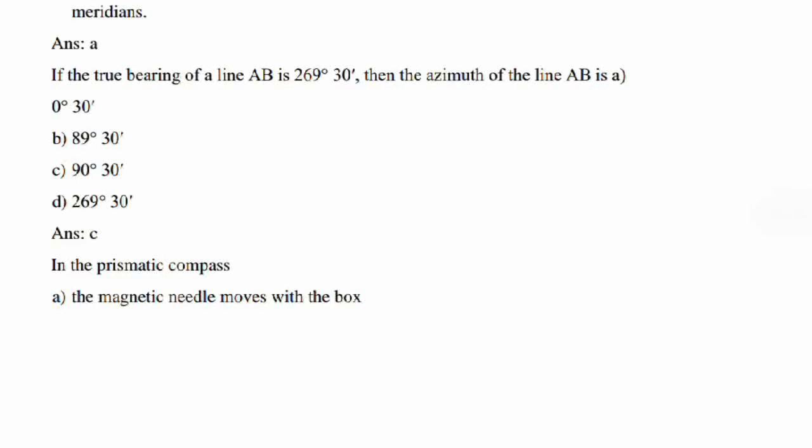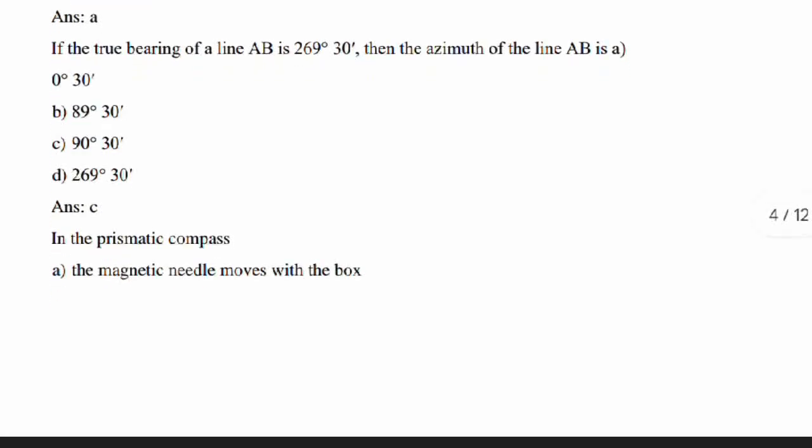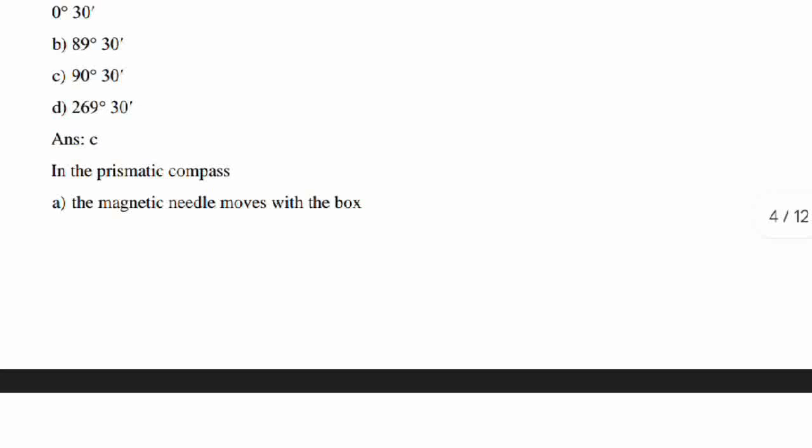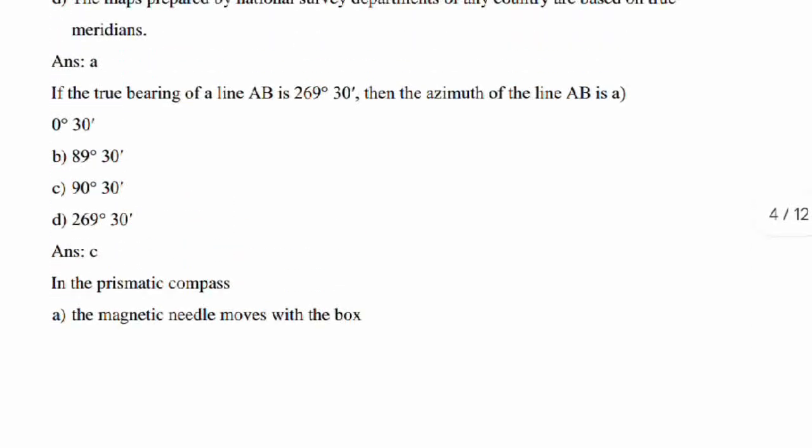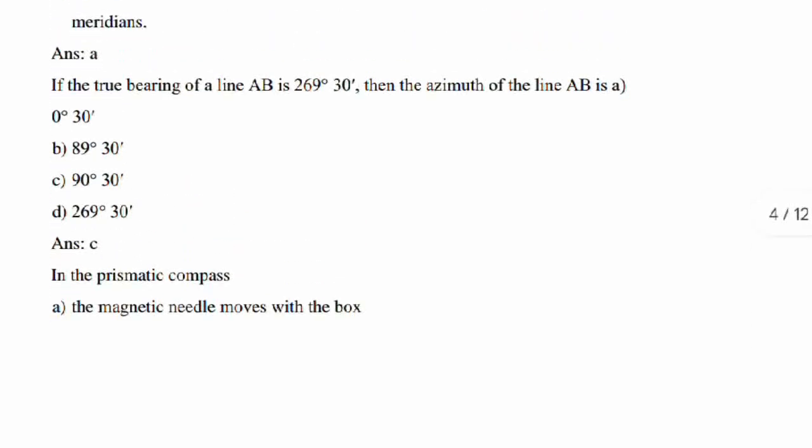If the true bearing of a line AB is 269 degrees 30 minutes, then the azimuth of the line AB is what? It is 90 degrees 30 minutes. So there is a formula for this. I think everyone is aware of it. In the previous videos, we have solved this kind of questions.